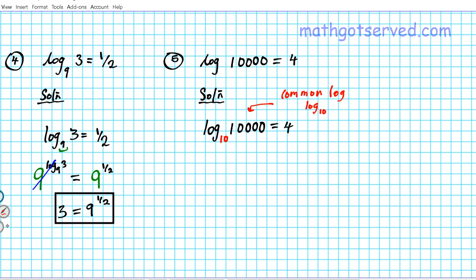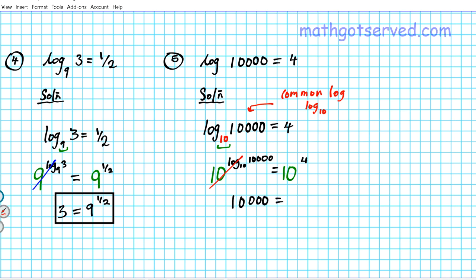Now we know the base of our logarithm is 10, so we put big 10s on both sides of the equation. We get 10 raised to log base 10 of 10,000 equals 10 raised to the fourth power. On the left side, the exponent and its logarithmic power have the same base, so we apply the inverse property of logs and cancel them out. We bring down the logarithmic argument: 10,000 is equal to 10 to the fourth power. That is the equivalent exponential form of the original logarithmic equation.